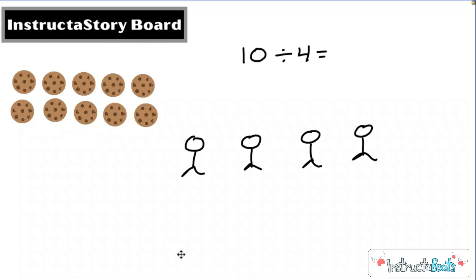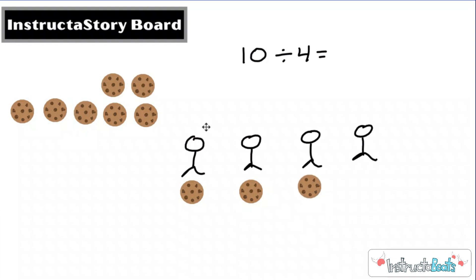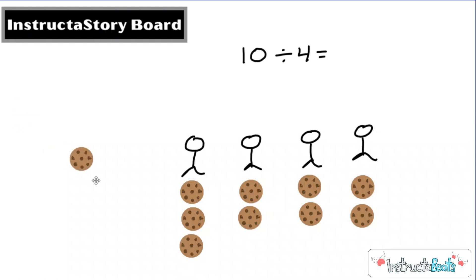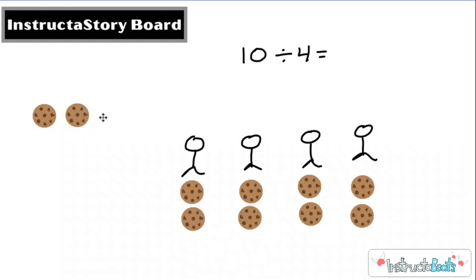But what happens when we don't have equal groups? If we give one cookie to Fred, one to Sandy, one to Sadie, and one to Billy Bob, and we start splitting these up evenly — because division is a total into equal groups — I don't have enough cookies to give everybody the same amount. Because division has to be equal groups, if I give these two to our first two friends, the other two friends aren't going to be very happy. So we can't give these cookies away. This is what we call a remainder.